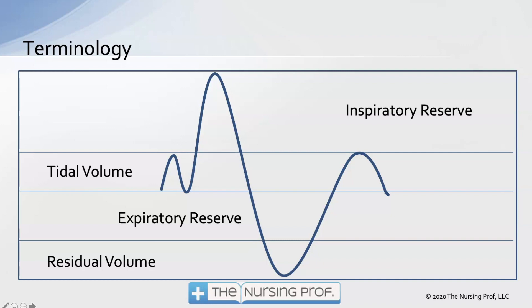Take a deep breath — that's your inspiratory reserve. Now blow out all the air in your lungs. When you blow it all the way out until you can't blow out any more, that's your expiratory reserve. We cannot exhale the residual volume — if we did, all the alveoli would slam closed and we'd have a very hard time getting the lungs to reopen. So our expiratory reserve is all the air we can blow out, which really isn't all the air because we have that residual volume at the bottom.